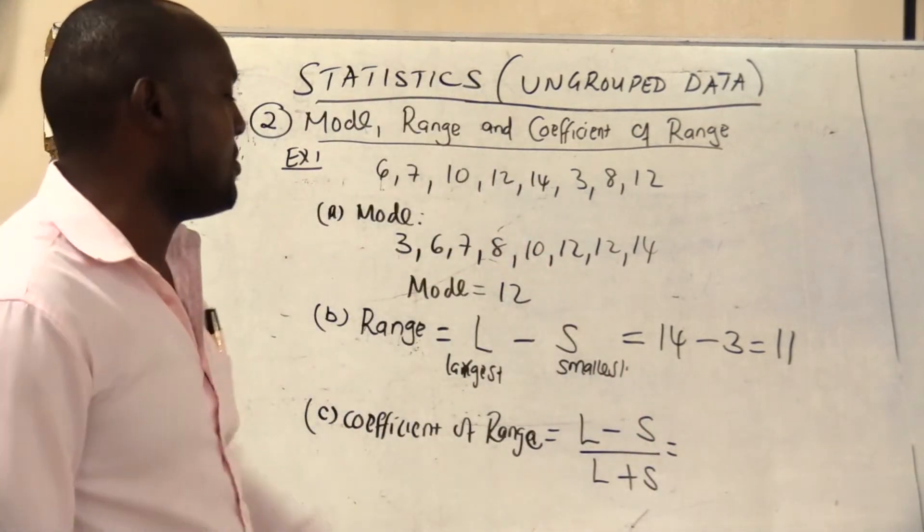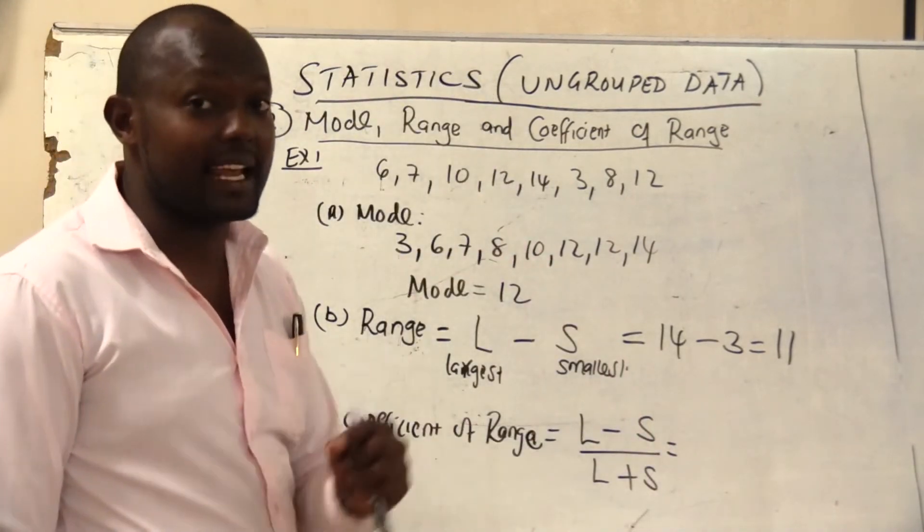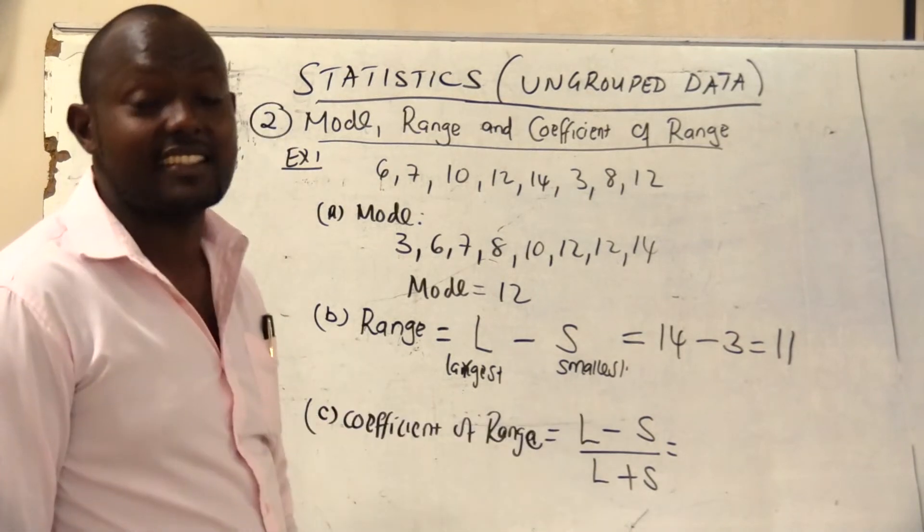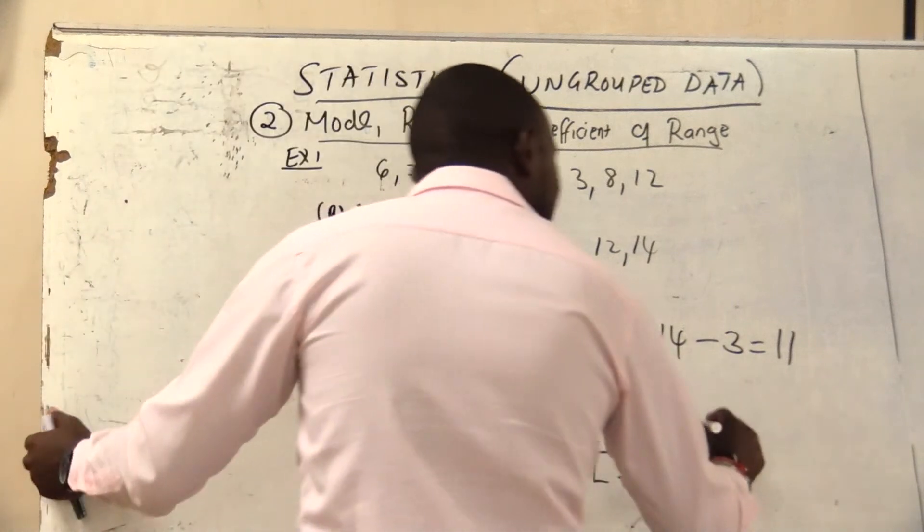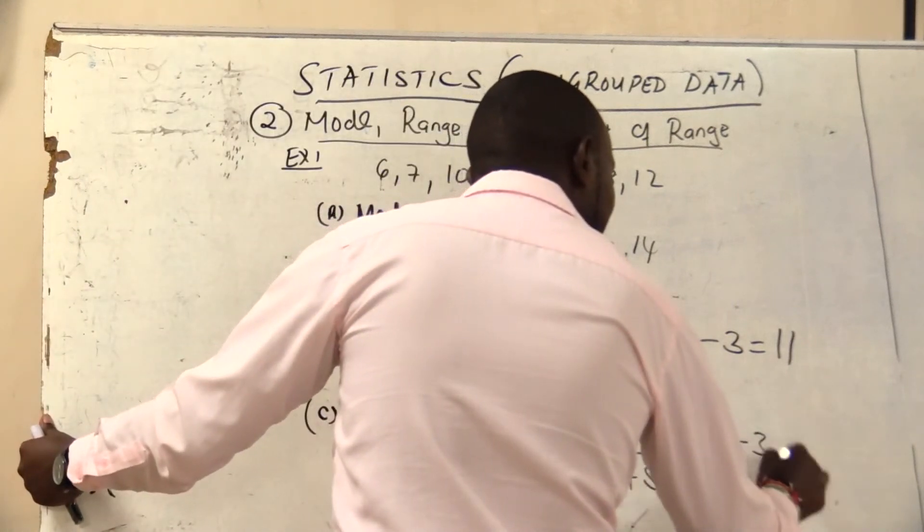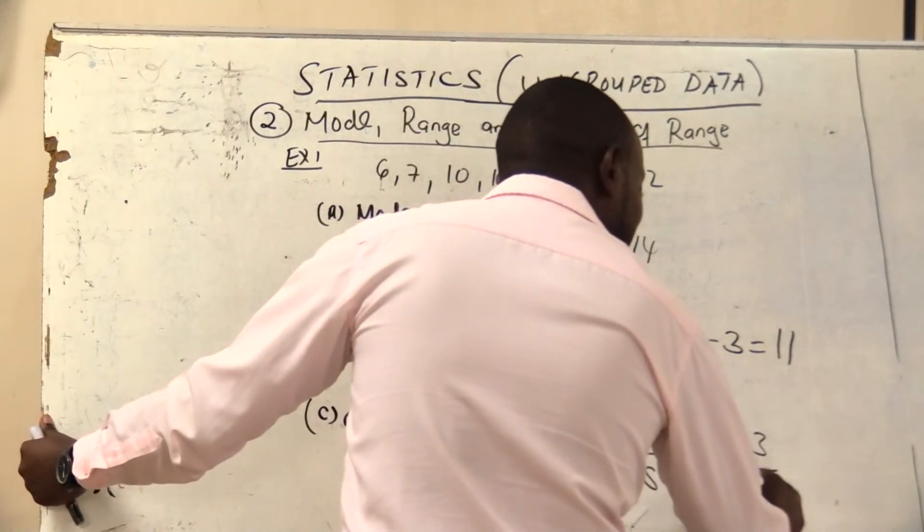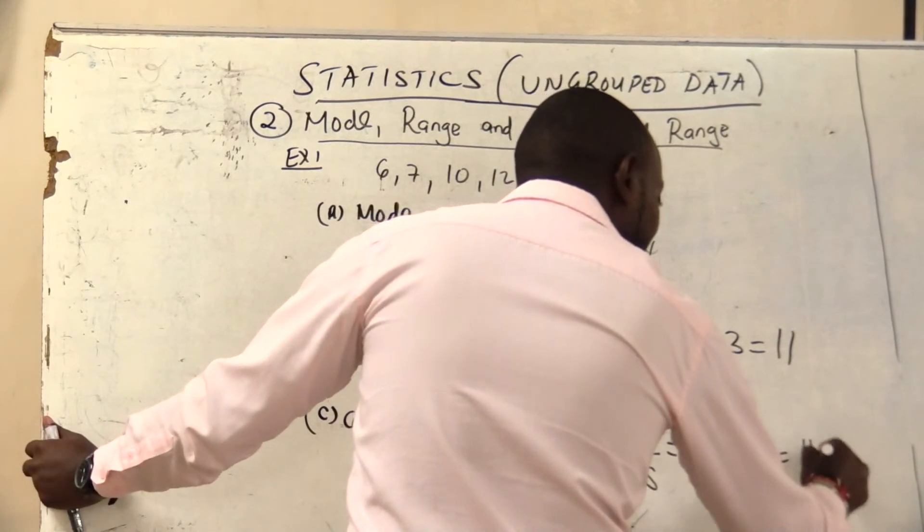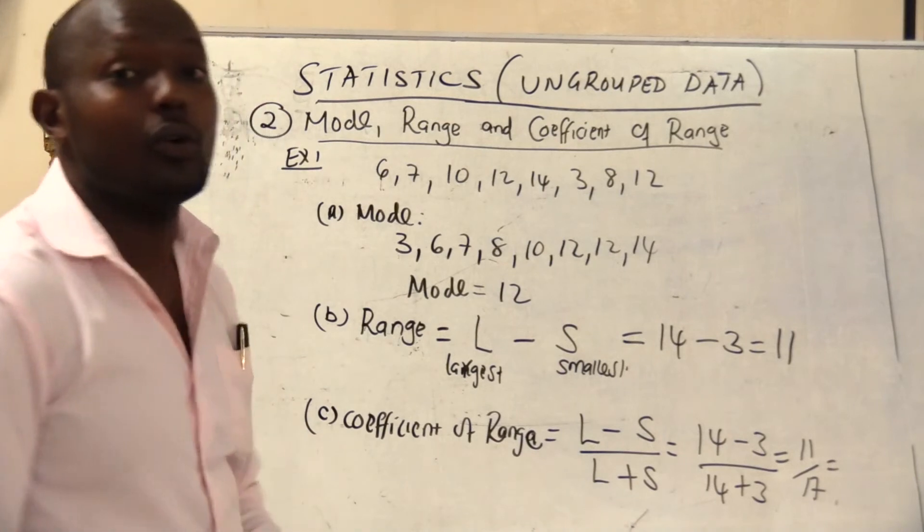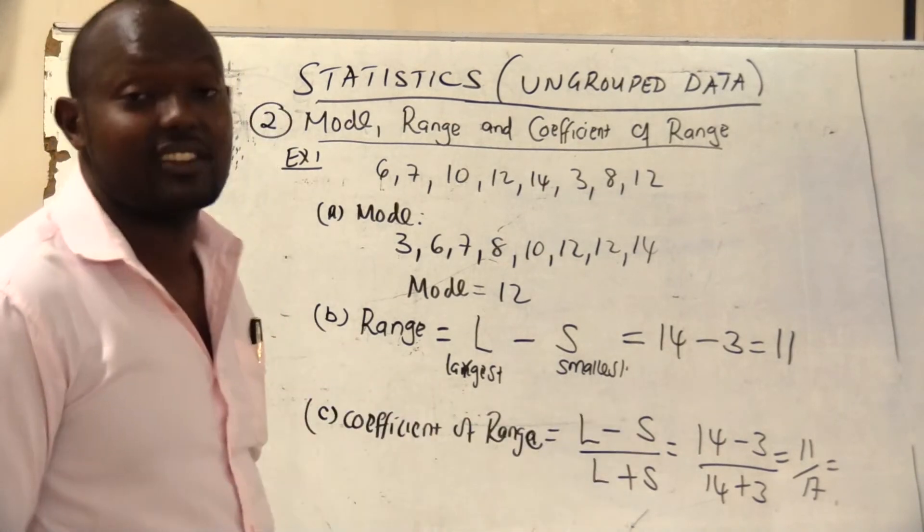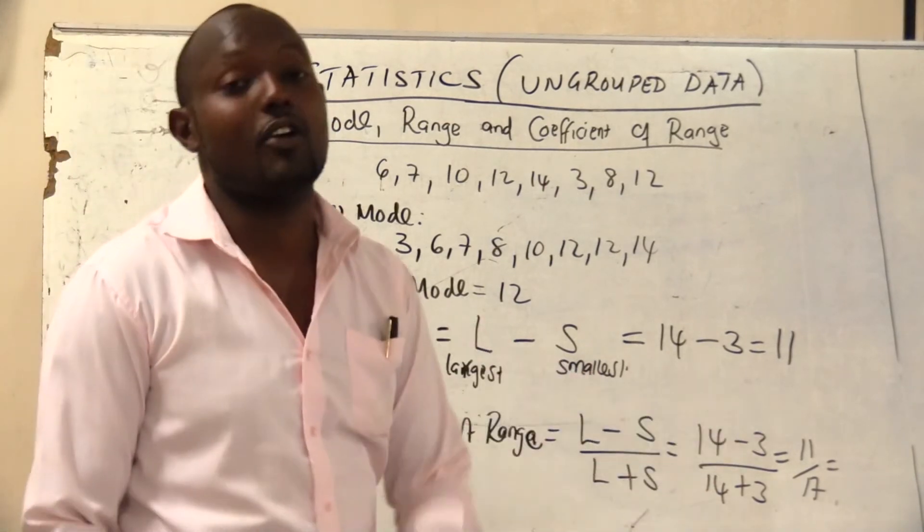In this one we say it will be L minus S all over L plus S. So in this case my L is my largest number, my S is my smallest number. So in this case my L is 14 minus 3 all over 14 plus 3. So you get 11 over 17. If you like to write that one into decimal you can, but you get 11 over 17.